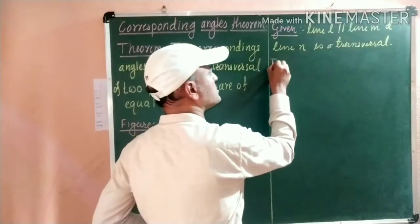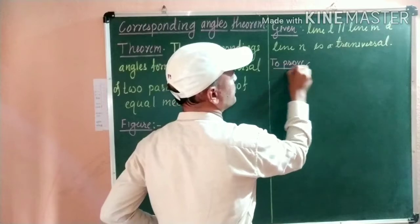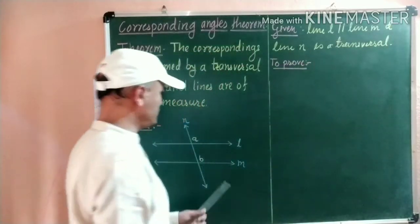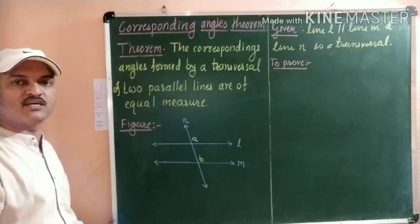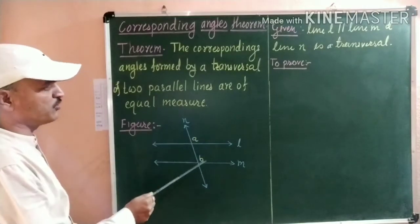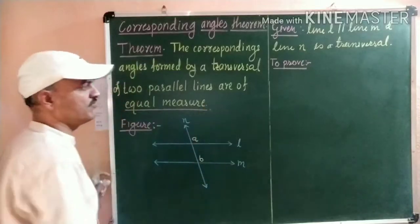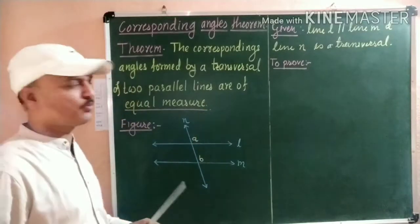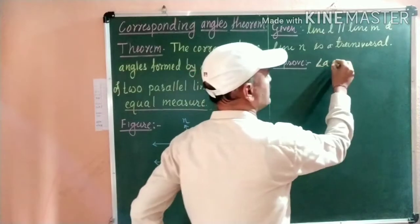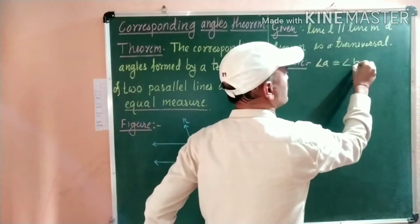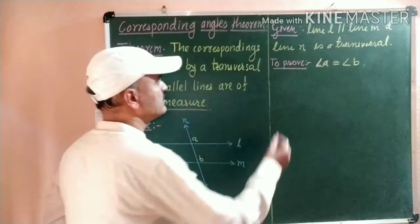Then, what is to prove? Because of this transversal, two corresponding angles are formed. We are going to prove that these two corresponding angles are of equal measure. Therefore, what we write here is: angle A is equal to angle B. Now we are going to write the proof.